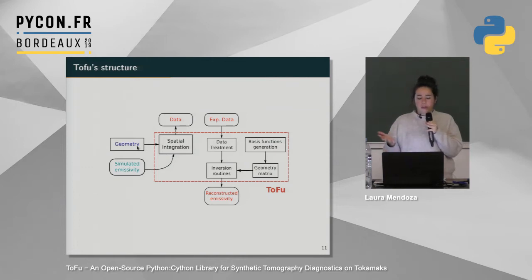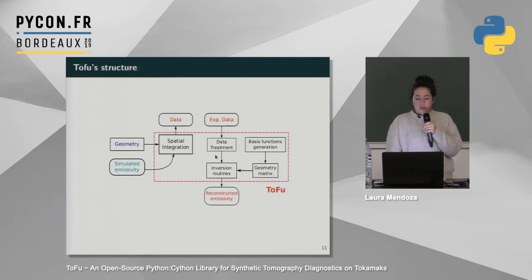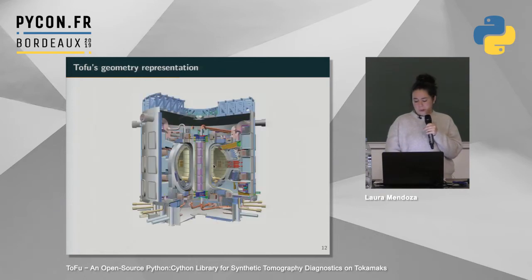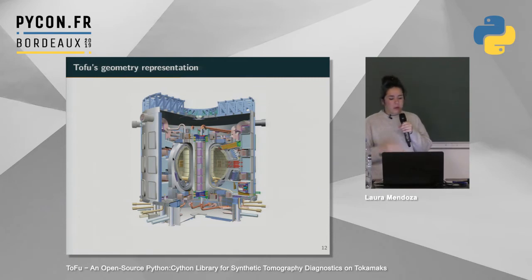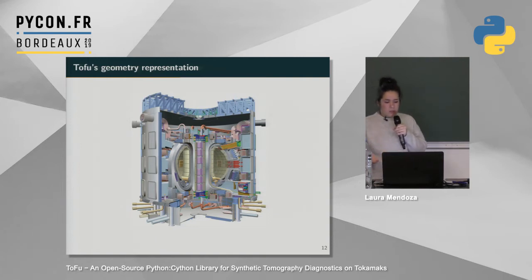The structure of the library has two main products: the direct and inverse problem. The direct problem takes simulated data, accounts for geometry, and with spatial integration you get measurements as you would from instruments. The inverse problem takes everything from geometry — basis functions and geometry matrix — and from experimental data, after filtering, you run inversion routines to reconstruct the emissivity. Let's look at what that looks like. This is the biggest tokamak we'll have in the near future — it's really gigantic. As a reference there is a human visible in the diagram, and you need millimeter-scale accuracy.